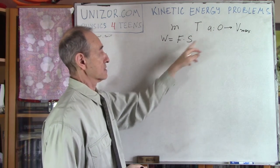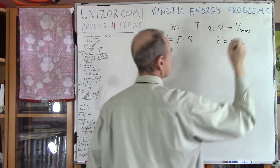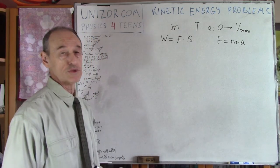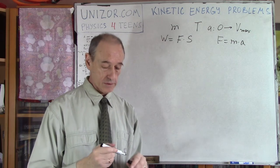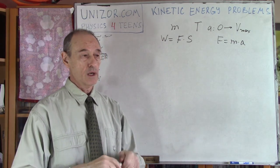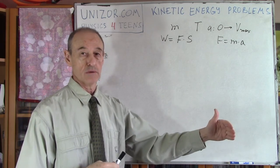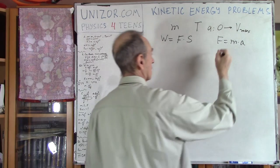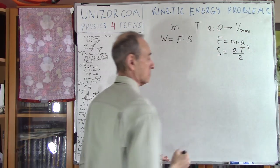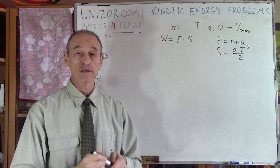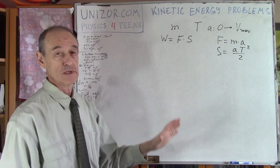Do we know F? Yes, it's M times A — that's Newton's second law. Speaking about distance: if you travel from speed zero to a certain maximum speed with constant acceleration A, then the distance is equal to A·t²/2. This is simple kinematics, and if you've forgotten, just go to the kinematics part of this course.